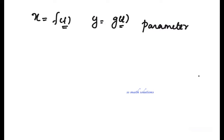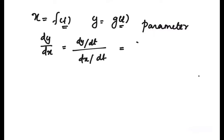So x and y are dependent on t. How to find dy by dx? dy by dx is equal to dy by dt divided by dx by dt. dy by dt means g dash of t, and dx by dt means f dash of t. Note that dx by dt must never equal zero. This is called the parametric form — the way we can find derivatives with respect to parametric equations.